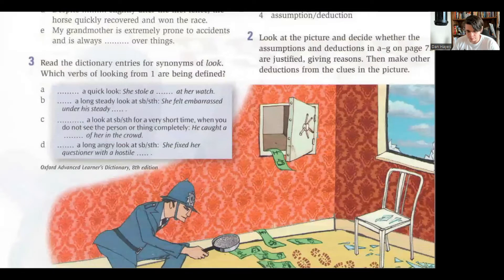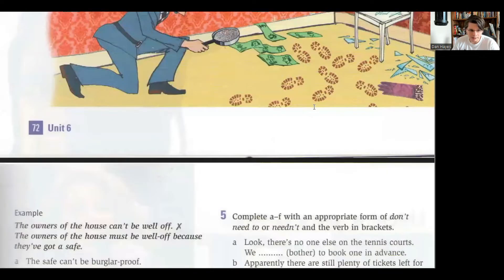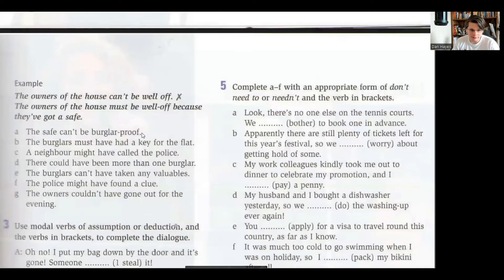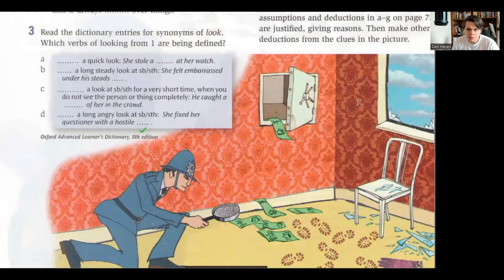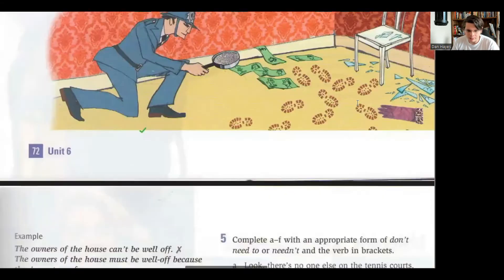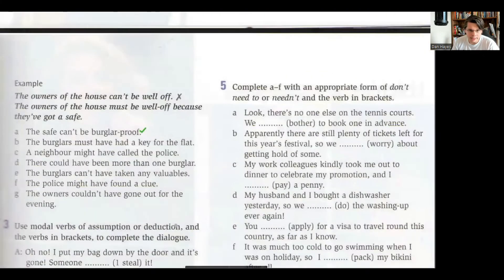The safe can't be burglar proof. I would say that's fine. Por lo que veo no es burglar proof, so they could open it. The burglars must have had a key - well I don't think so because the window is broken. So if you have a key why would you break the window? A neighbor might have called the police - yeah, who knows, that's a possibility.